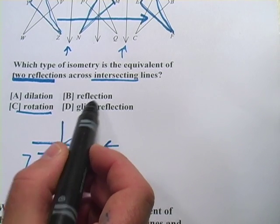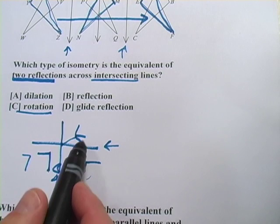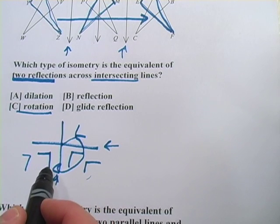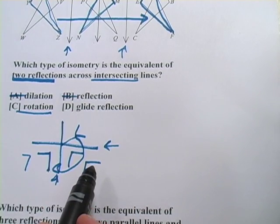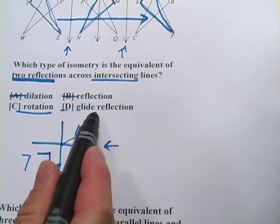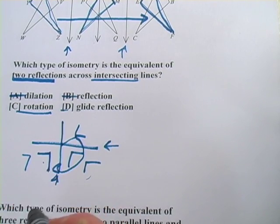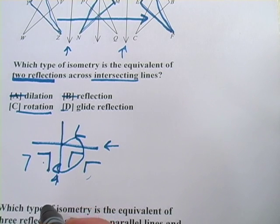A single reflection couldn't give you that orientation change. It would just be a mirror image of itself rather than what we get over here. So single reflection is out. Dilation changes the size of something, and we're not doing that. And a glide reflection, again, it involves only a single reflection. It can't give you this orientation change. Only a rotation could do that.